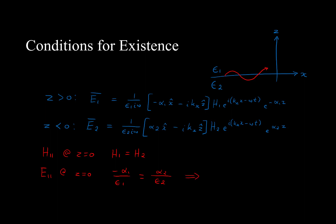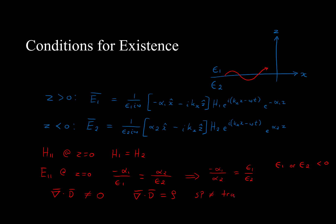Looking at the above equations, we can see that that is only true if negative alpha 1 over epsilon 1 is equal to alpha 2 over epsilon 2. Therefore, we can see that negative alpha 1 over alpha 2 must necessarily be equal to epsilon 1 over epsilon 2. Since from learning dispersion we know that epsilon can in fact be negative, this looks like it will work. We can have a surface plasmon if epsilon 1 or epsilon 2 is less than 0. As you can see from the above equations, the divergence of D, which is the scale factor of E, cannot be equal to 0. This implies that there must be some form of charge at the surface from the integral version of Maxwell's equations. This also means that a surface plasmon is not a transverse wave.